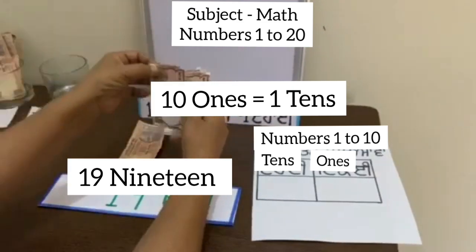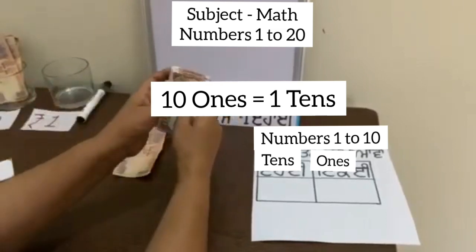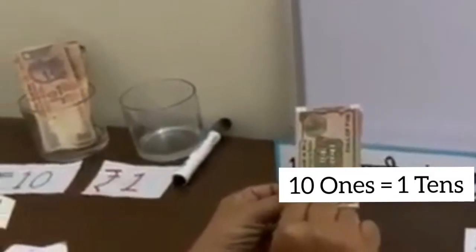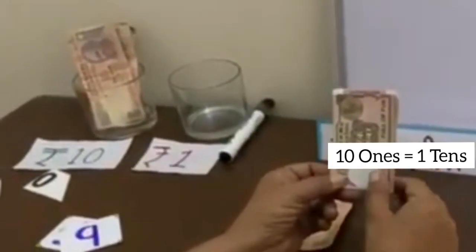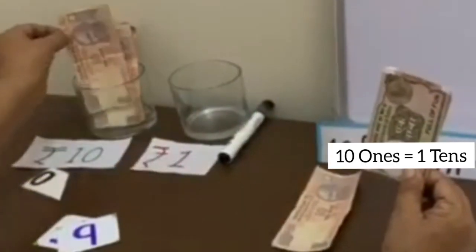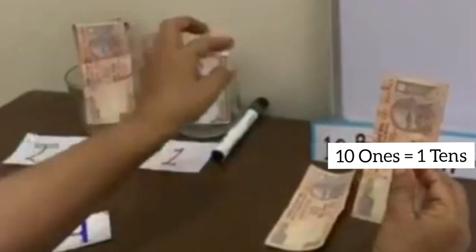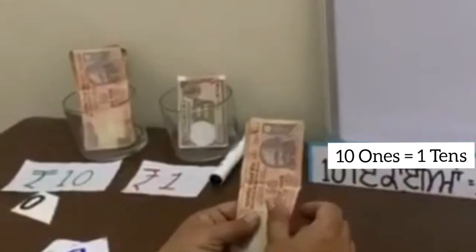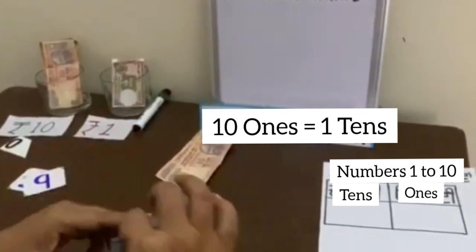Now we take 1 more note of rupees 1. So now we have total 10 notes of rupees 1. So we have already learnt that value of 10 notes of rupees 1 is equal to rupees 10. So now if we exchange these 10 notes of rupees 1 with 1 note of rupees 10, we have 2 notes of rupees 10. So 10 plus 10 is equal to rupees 20.